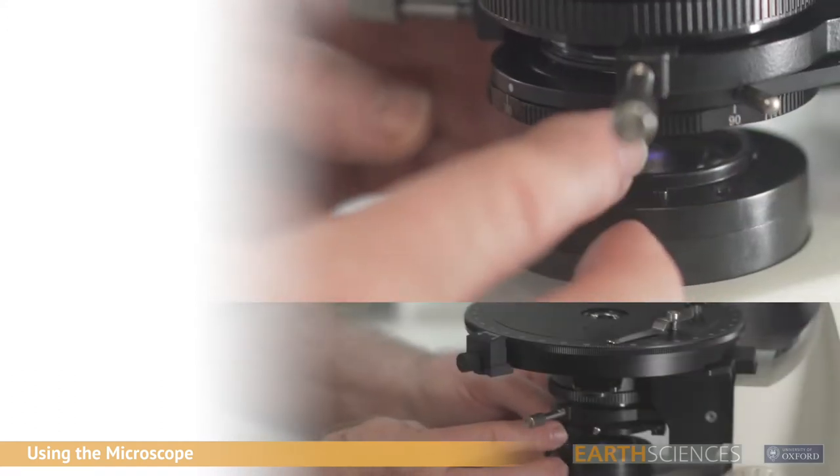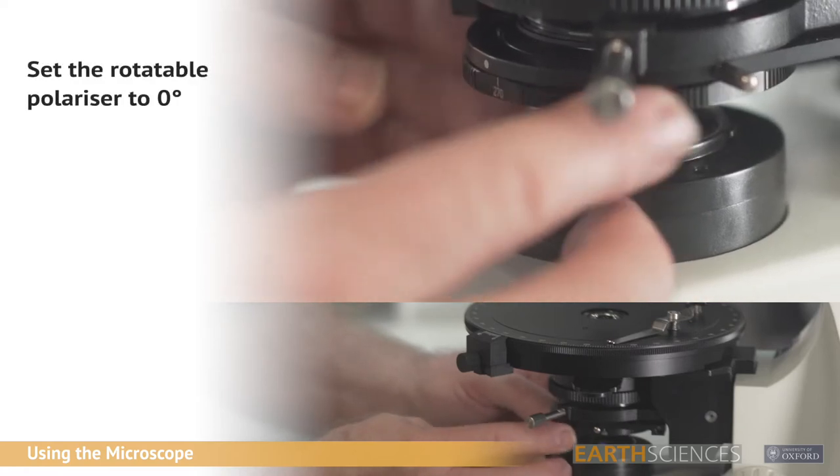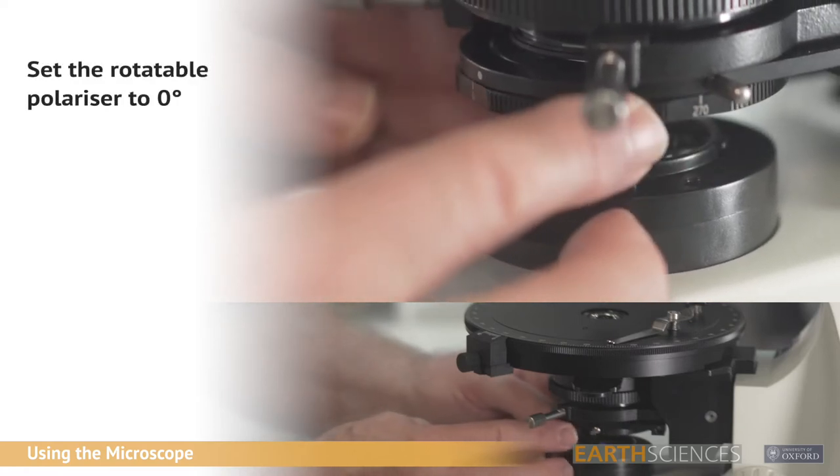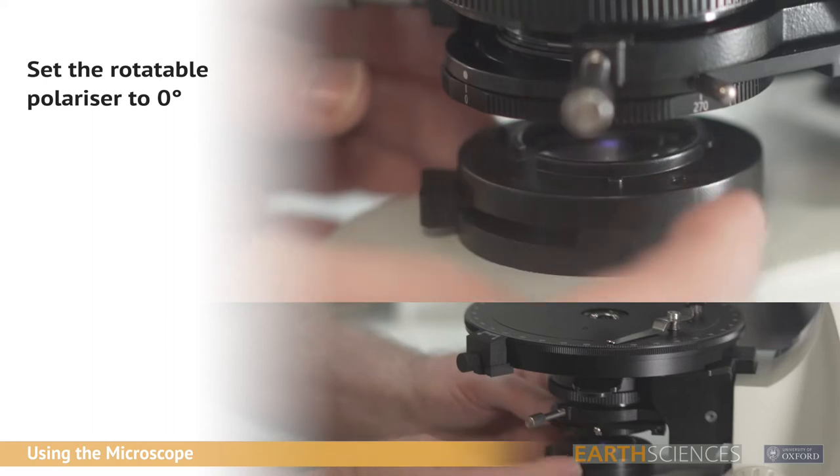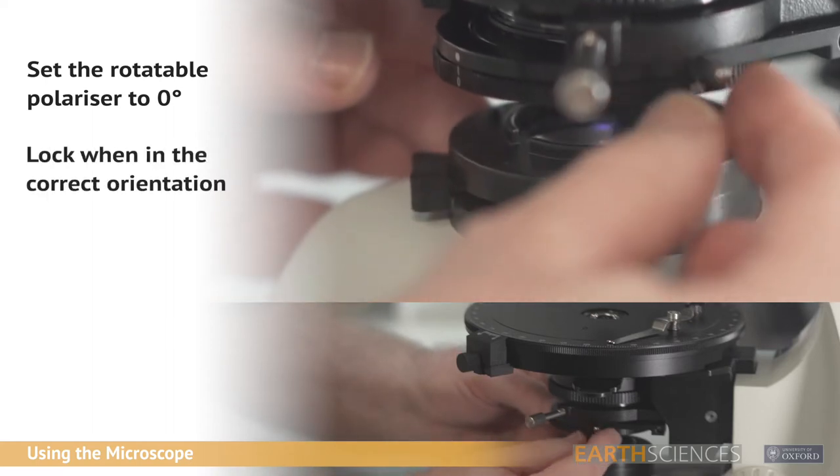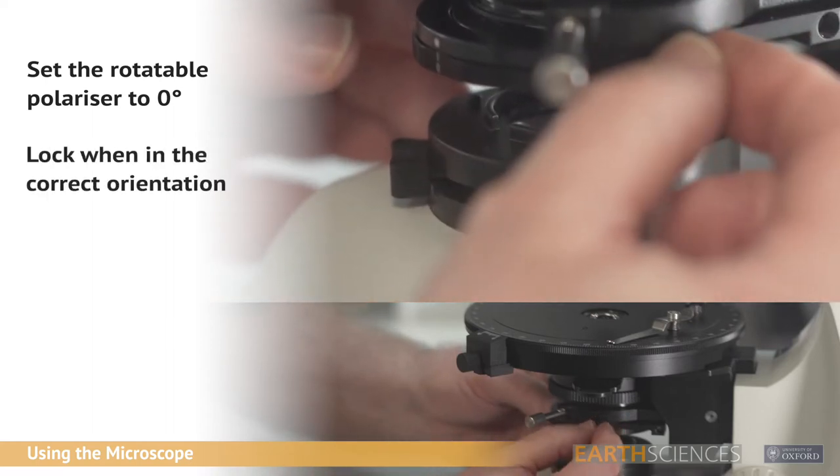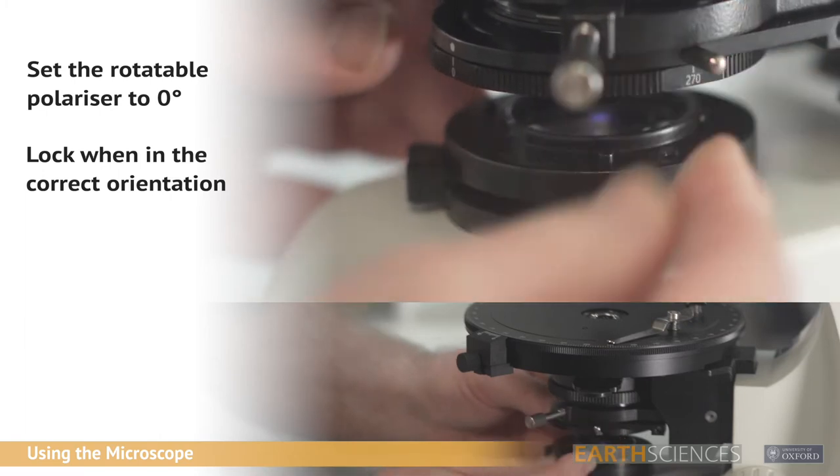Under the substage condenser is the swing in-out rotatable polarizer. This is marked with 0, 90, 180, and 270 degrees. Ensure that this is in the 0 degree position at the start of use. There is a silver locking screw to the right hand side.